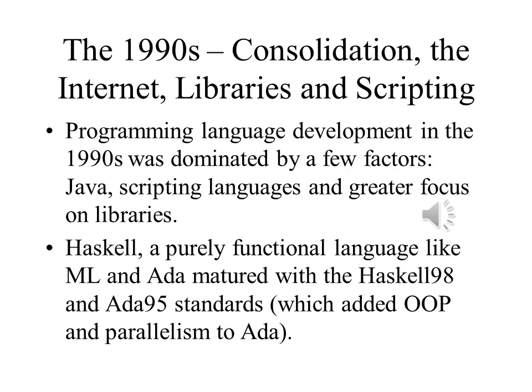Java gave way to several scripting languages, and there were other scripting languages developed in the 1990s, including JavaScript. The other legacy of Java was its collection of libraries that allowed Java programmers to do an enormous variety of sophisticated tasks. Haskell, a purely functional language like ML, matured, leading to the Haskell 98 standard.